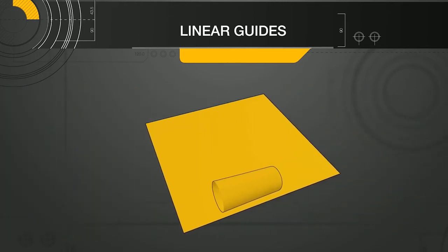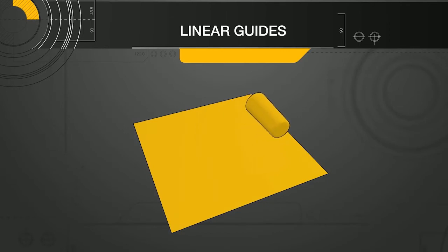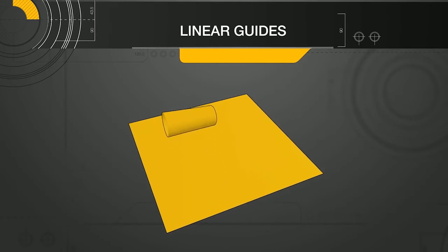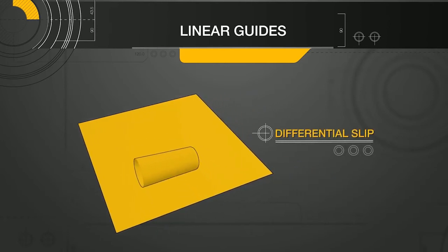This is very similar to trying to roll a cup in a straight line. It always wants to turn towards the smaller end. To roll in a straight line, one end must slip or slide. This is called differential slip.